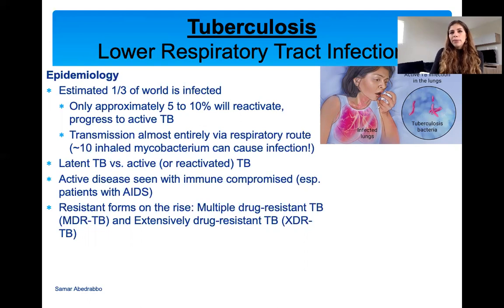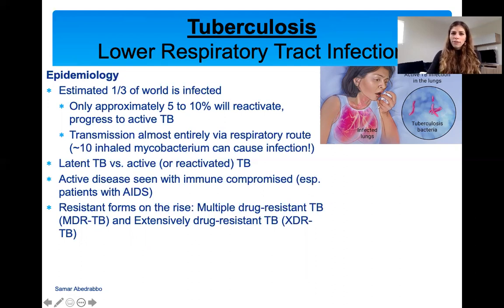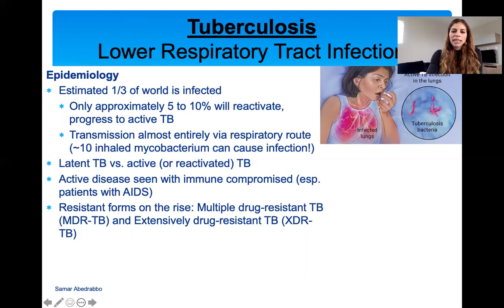With tuberculosis, we're seeing a lot of resistant bugs on the rise. There is multiple drug-resistant tuberculosis and extensively drug-resistant tuberculosis. This extensively drug-resistant TB is resistant to almost every antibiotic we have, making it a very serious issue. There isn't a lot of active research in this field, partly because the bacteria grow so slowly — it takes a really long time to conduct experiments.